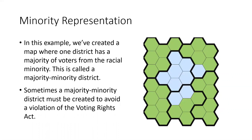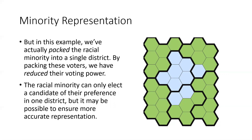Here's an example that does provide some representation. We've created what's called a majority-minority district — one district where a majority of the voters are of the racial minority, which provides one district with some representation. Sometimes you do have to create a majority-minority district to avoid a violation of the Voting Rights Act. However, in this example we've actually packed the racial minority into a single district as much as possible. By packing these voters into a single district, we've reduced their voting power — they can only elect a candidate of their preference in that one district. But it may be possible to ensure more accurate representation, which we'll show on the next slide.